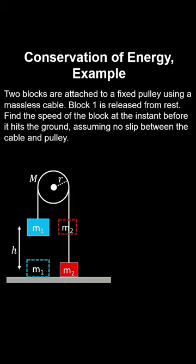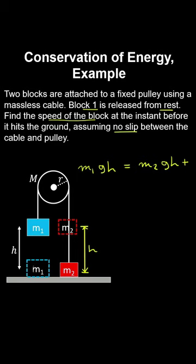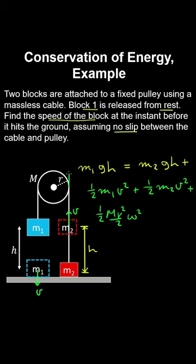Two blocks attached to a fixed pulley via a massless cable: block one is released from rest; find the speed when it hits the ground. Applying conservation of energy to the entire system: block one has initial potential energy equal to the final energy of the system. Mass two moves up height h, both blocks have kinetic energy (1/2 mv²), plus the rotational kinetic energy of the pulley (1/2 I omega²). By no-slip, v equals r omega. The pulley's potential energy is fixed and cancels. Making cancellations, we solve for the speed of the block before it hits the ground.